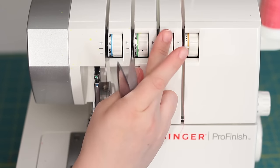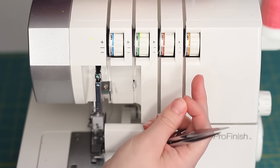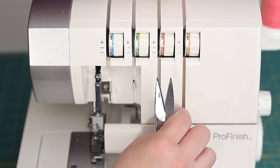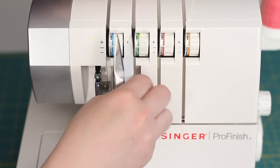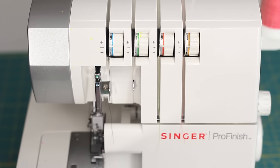Set all of your tension disks to zero. Now you want to make sure your thread is really flossed in between those tension disks. So we've got the first part of our threading all set up.